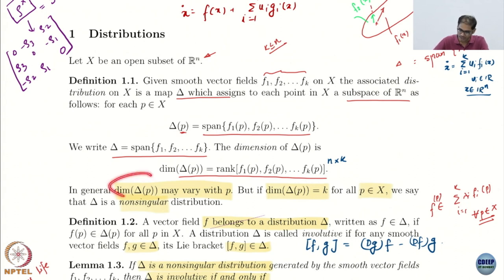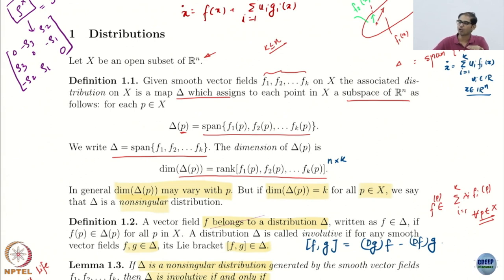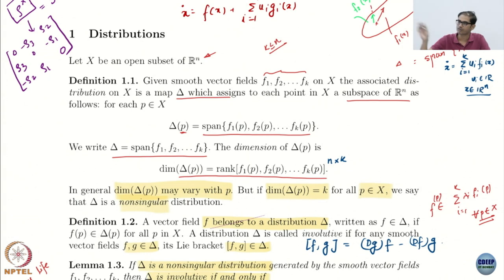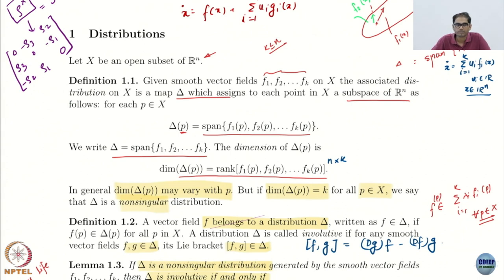But that is not what we look at. We usually look at distributions which have constant rank, meaning the dimension remains the same for your entire space of interest. Such distributions are called non-singular distributions.